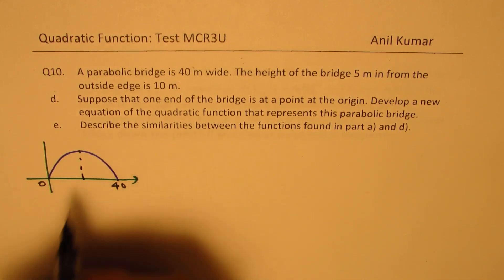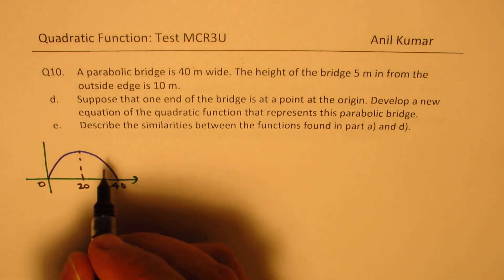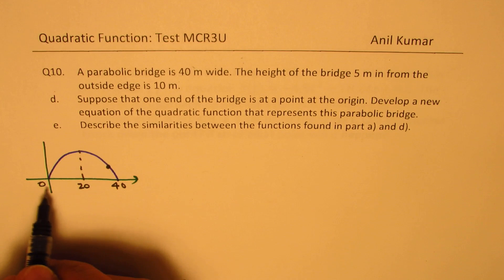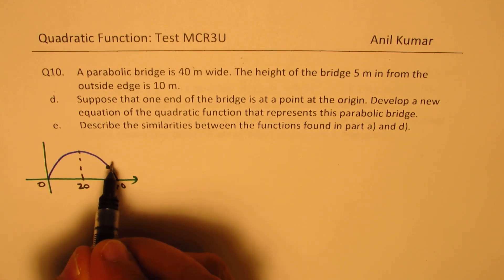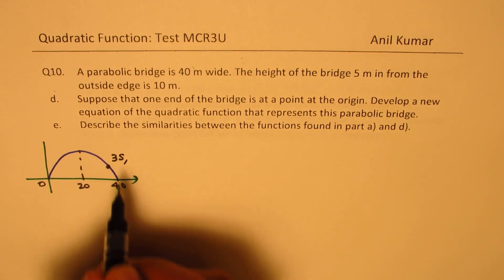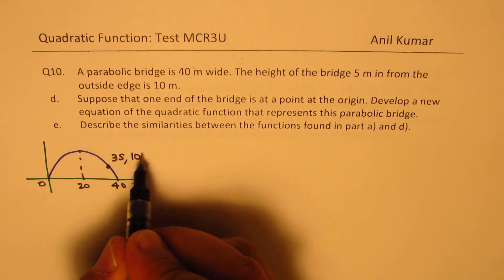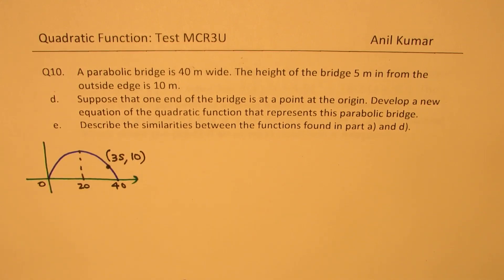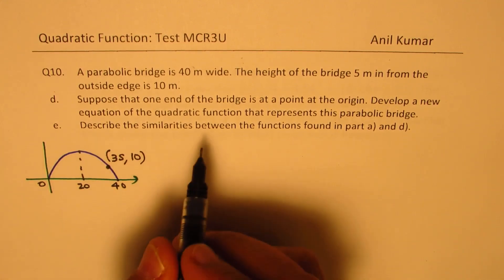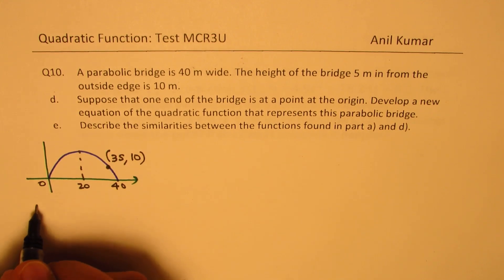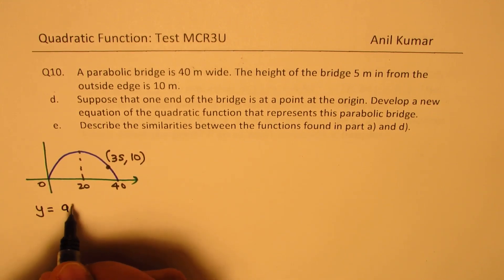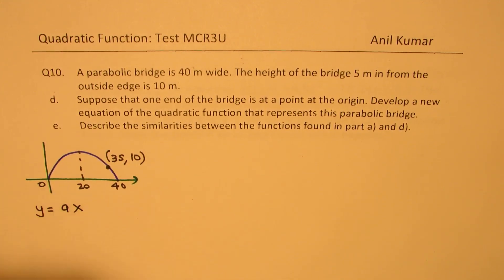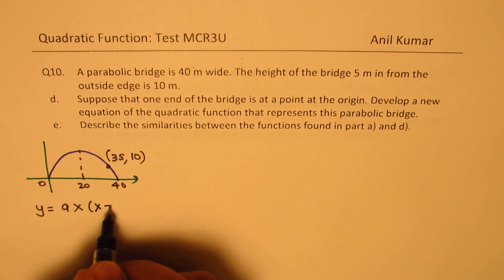40 meter wide will mean 0 to 40. Now in this case, the maximum will occur at 20. The point given to us is this, which is 5 meters inside, means x value of 35, the height is 10. So that becomes the situation now, right? So in this particular case, the y value can be written as a times x, since that is your intercept, and this is x minus 40.